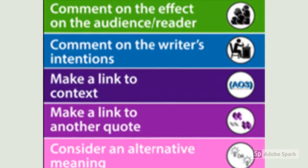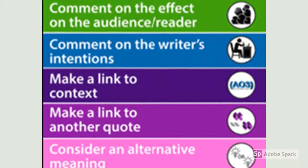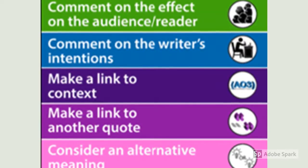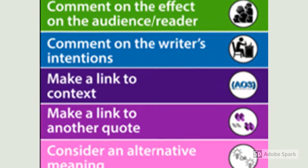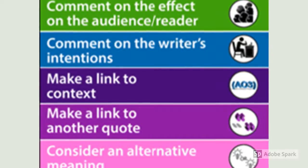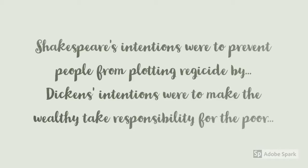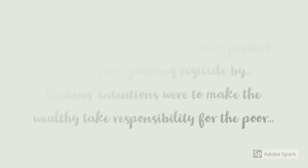For this strategy, all you need to do is think about why the writer portrayed the characters, theme, or plot in a particular way. For example: 'Shakespeare's intentions were to prevent people from plotting regicide by...' — that shows Shakespeare's reasons for presenting Macbeth in the way that he does. For the second example: 'Dickens' intentions were to make the wealthy take responsibility for the poor.'